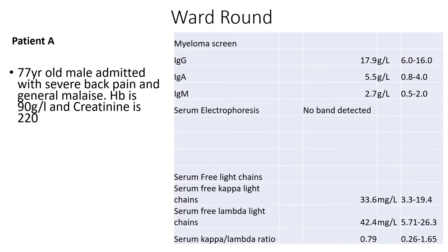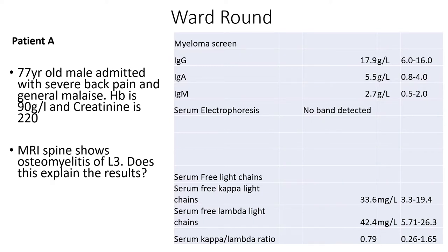You have a 77 year old male admitted with severe back pain and general malaise and fatigue. His HB is 90, so a little bit low, creatinine's up at 220. MRI spine shows an osteomyelitis of L3. Have a look at the results and see if this explains them — does he have myeloma or not? Just pause the lecture and take a second to have a look.